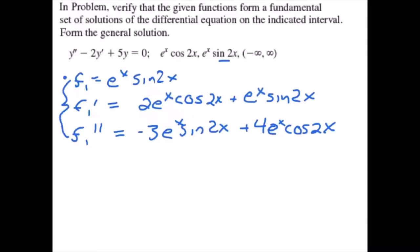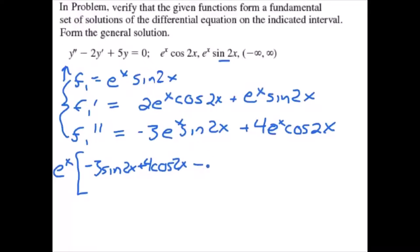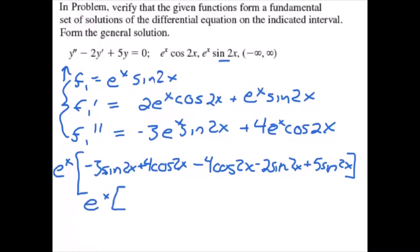Let's plug that into our equation to verify it is a solution. Pulling e to the x out of everything, we get negative 3 sine 2x plus 4 cosine 2x minus 2 times 2, so minus 4 cosine 2x minus 2 sine 2x, plus 5 sine 2x. Collecting sine terms: 5 minus 2 minus 3 equals 0, and 4 minus 4 cosine 2x equals 0. So that is a verified solution.